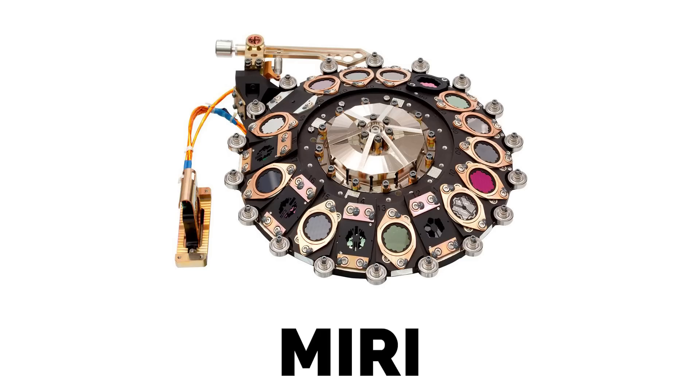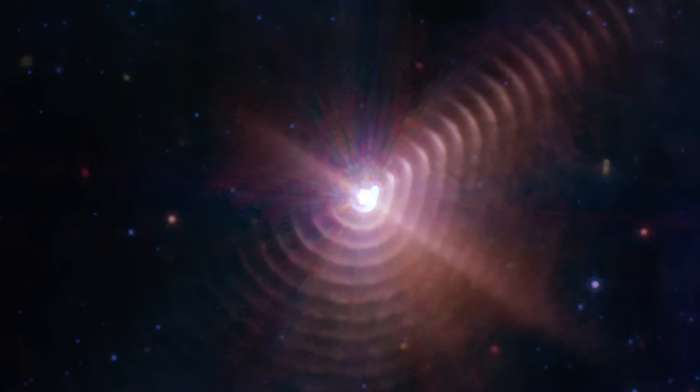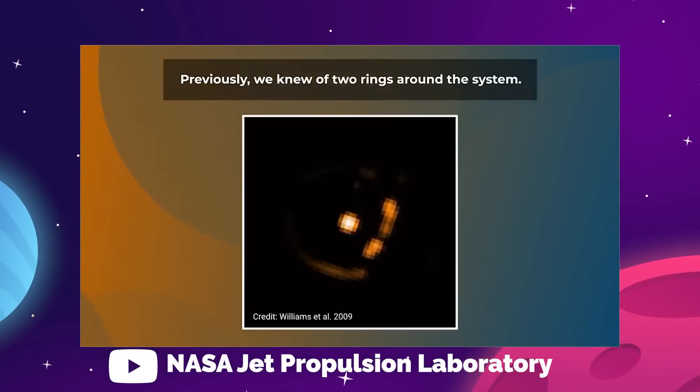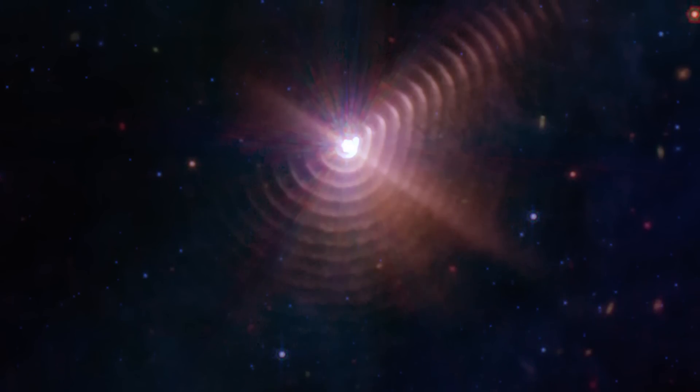These images were taken with the telescope's MIRI, the mid-infrared instrument, and allowed for this much clearer view of a dust wave that previously looked like two ripples. The reason for these patterns has to do with the unique nature of this system.